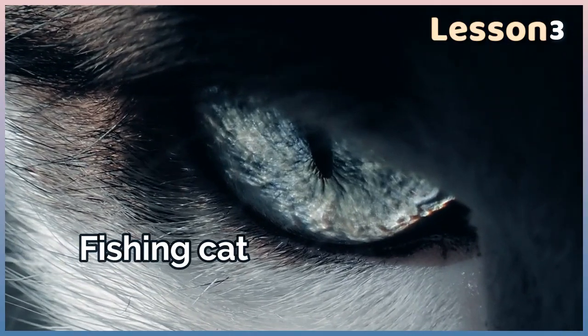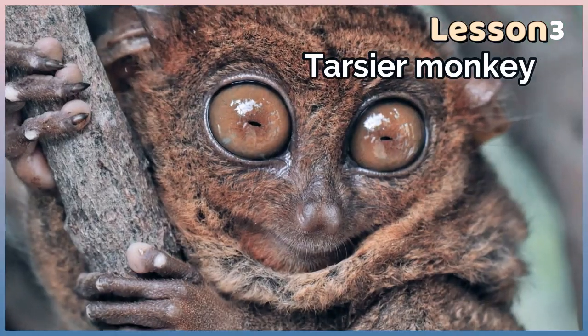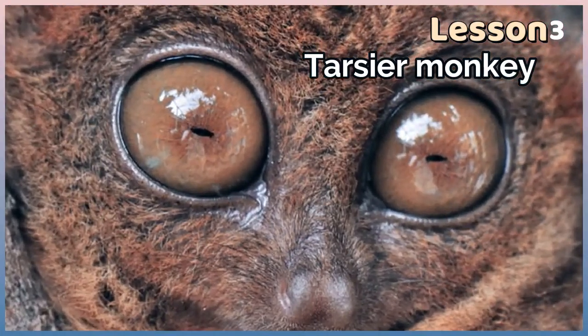Some animals have spectacular night vision, which enables them to see at night. Fishing cats have a special eye structure that helps them find their prey in the dark. Tarsia monkeys have huge eyes that can see almost everything in the dark.